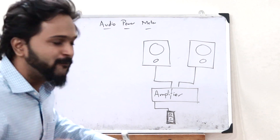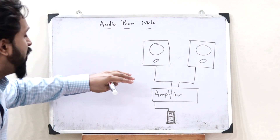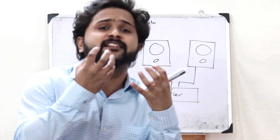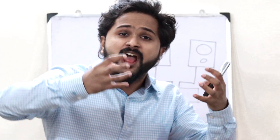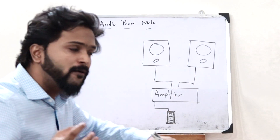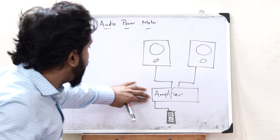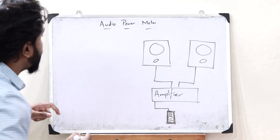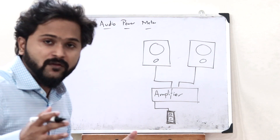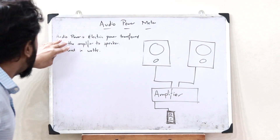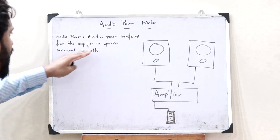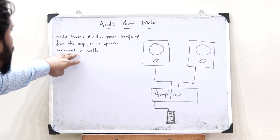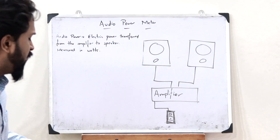The term audio power is defined as the amount of electric power that is transferred from the amplifier to the speakers. That is simply what we refer to as audio power. Therefore, an audio power meter is a device used to measure how much power is transferred from the amplifier to the speaker. Audio power is measured in watts.